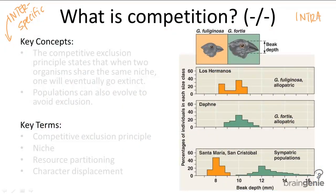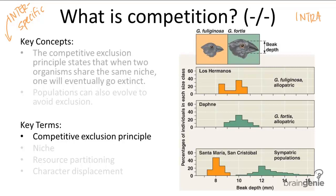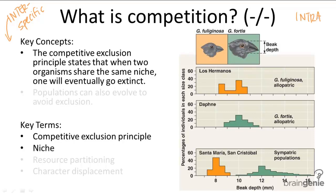Competition doesn't actually happen that often between populations because of the competitive exclusion principle. This principle states that when two organisms compete in the same niche over time, only one will survive. An organism's niche is made of the biotic and abiotic factors it needs in its environment — for example, the temperature range it is adjusted to, the time of day or time of year it is active, or the food it needs.